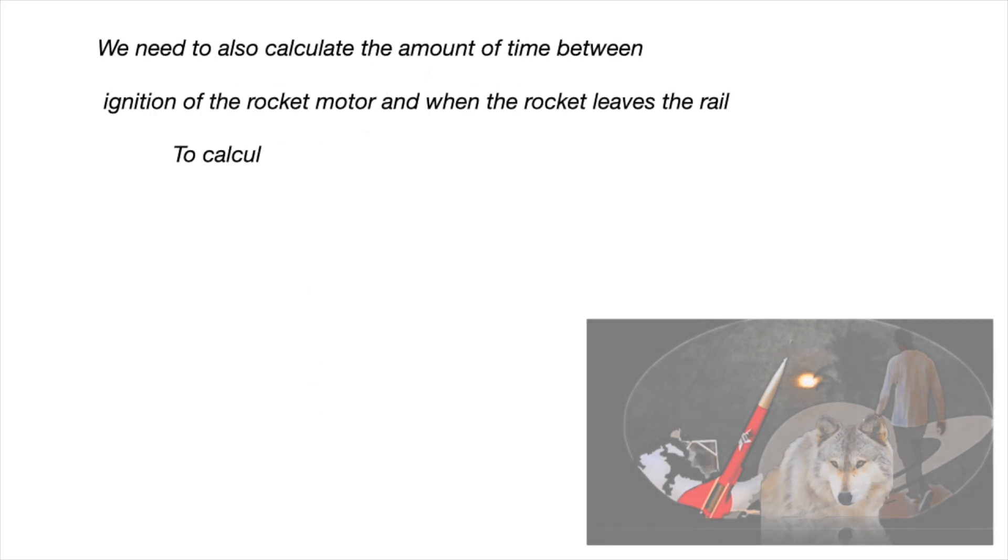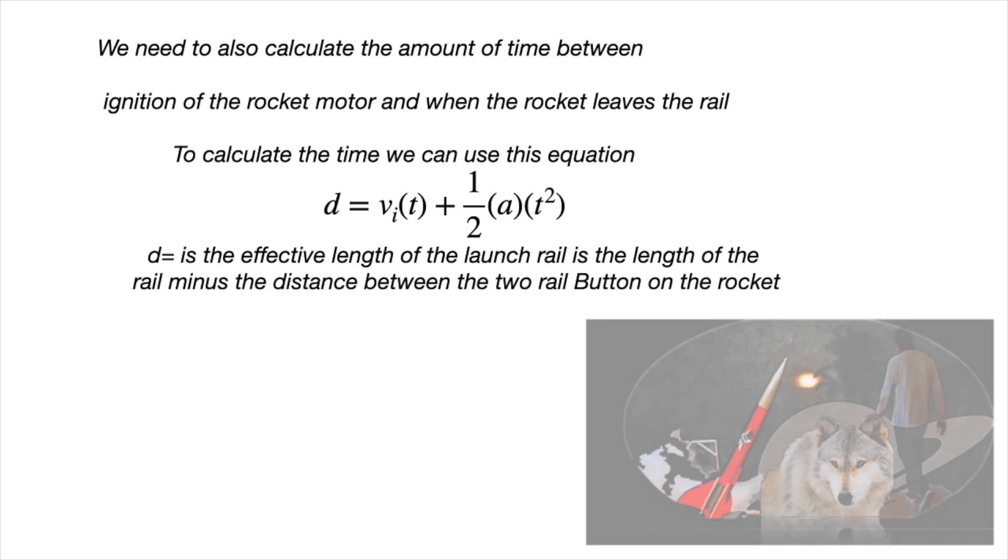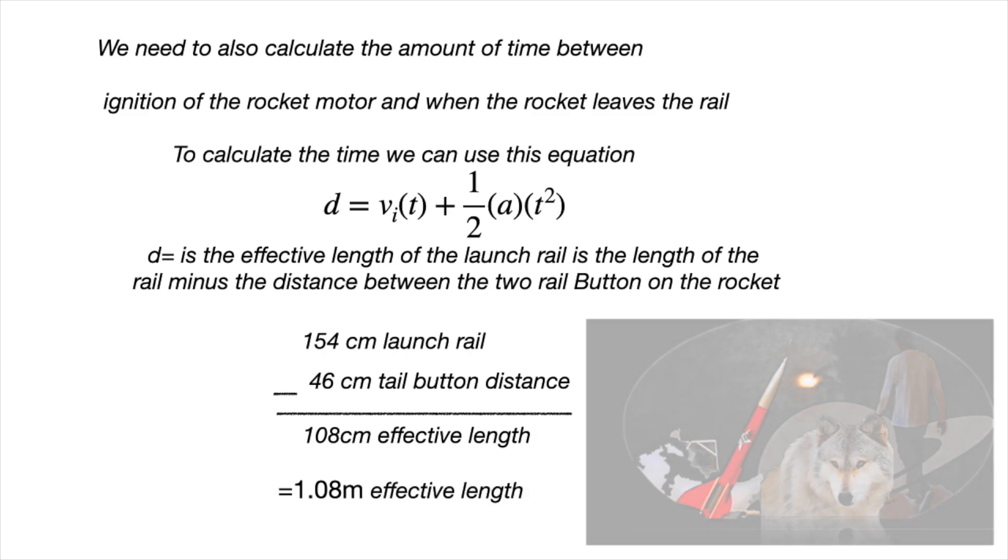We also have to calculate the amount of time between the ignition of the motor and when the vehicle leaves the rail. To determine this time, we use the equation D equals V initial times time plus half A times time squared. D is the effective length of the launch rail, which is the length of the rail minus the distance between the two rail buttons of the rocket. The launch rail measures 154 centimeters, and the distance between the two rail buttons is about 46 centimeters, when subtracted giving a value of 108 centimeters or 1.08 meters.